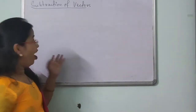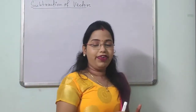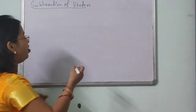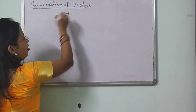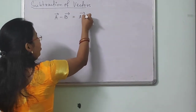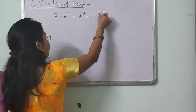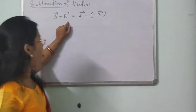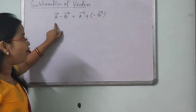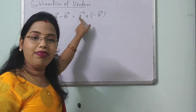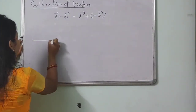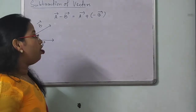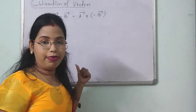Now we will study about subtraction of vectors. In the previous video we learned vector addition; now we will see how to do vector subtraction. Suppose I take A vector minus B vector — I can also write this as A vector plus (minus B vector). So the subtraction of vector B from vector A equals the addition of the negative of vector B with vector A. Suppose I have two vectors A and B, and I need to subtract them.